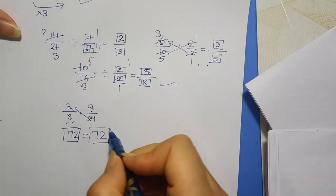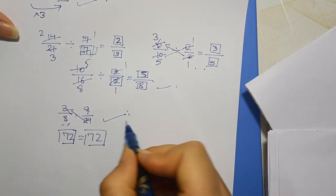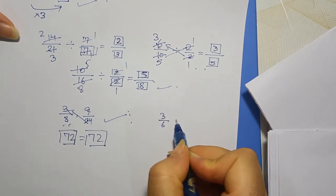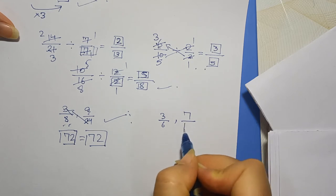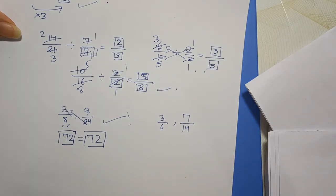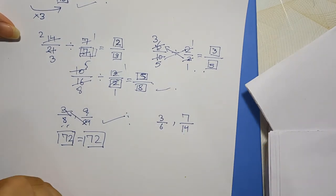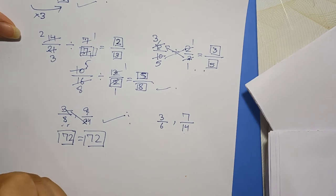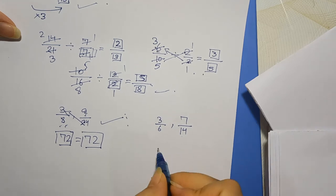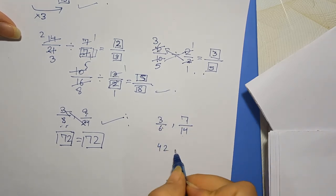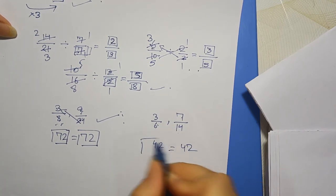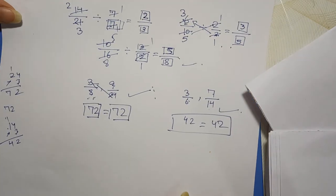That means yeh equivalent fractions hain — yeh pairs equivalent hain. Doosra wala: 3 upon 6 aur 7 upon 14. Equivalency check karne ke liye cross multiply karenge. 14 into 3: 3 fours are 12, 3 ones are 3 — 42. Aur 6 into 7: 6 sevens are 42. That means yeh bhi equivalent fraction hai.